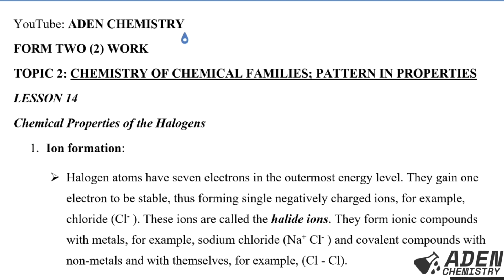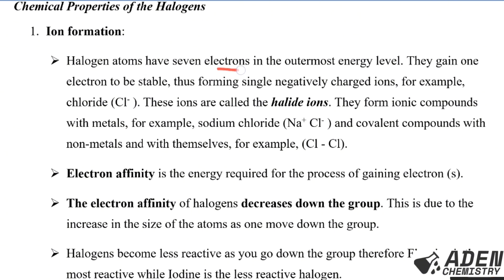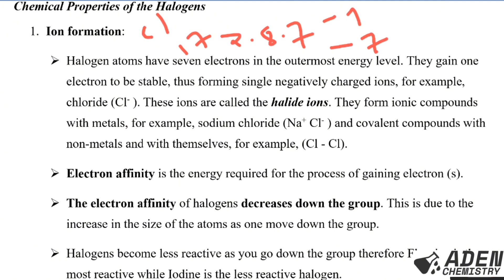We want to see how halogens form ions. Halogen atoms have seven electrons in their outer energy level; they gain one electron to be stable, thus forming single negatively charged ions. For example, the chlorate ion — chlorine atom has an atomic number of 17 with electronic configuration 2,8,7. For chlorine to form an ion, it can gain one electron or lose seven electrons, and less energy is required to gain one electron.